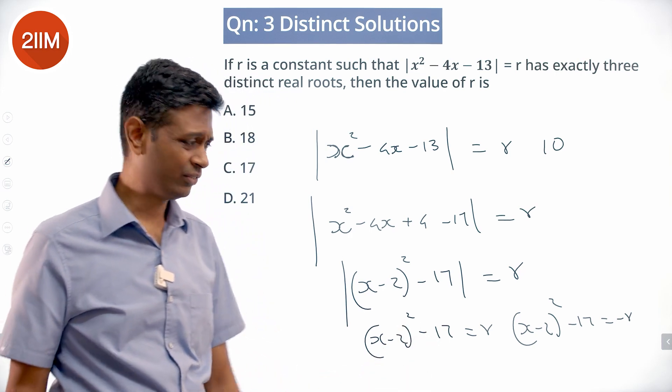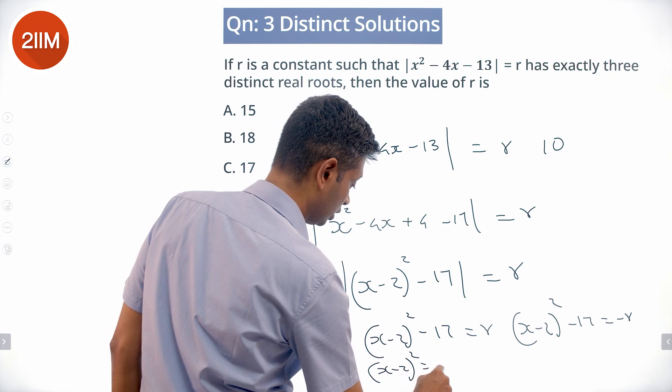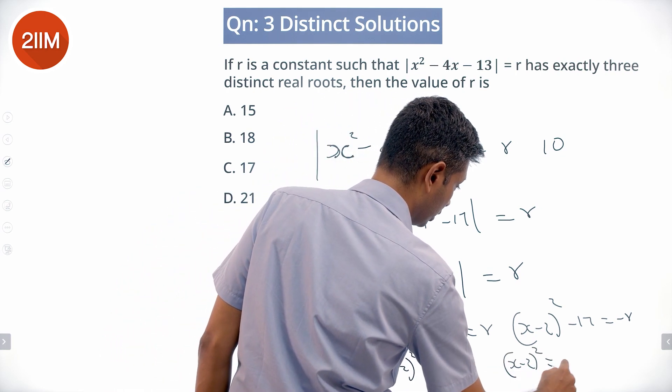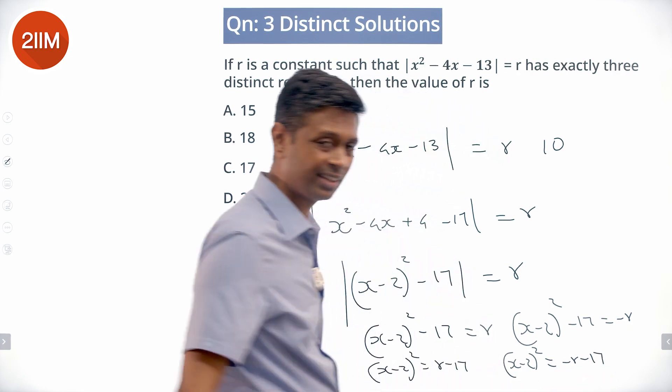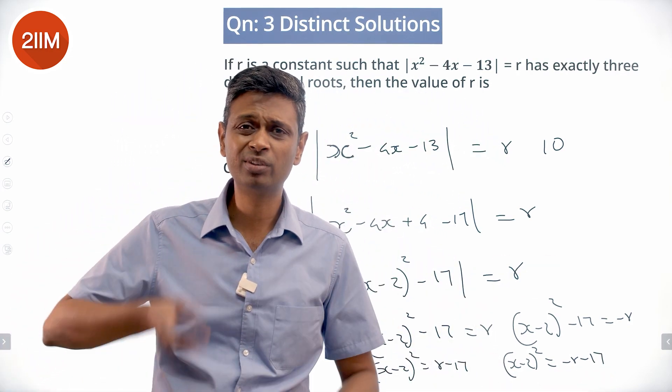This gives us (x - 2)² - 17 = r or (x - 2)² - 17 = -r. Effectively (x - 2)² = r + 17 or (x - 2)² = -r + 17.